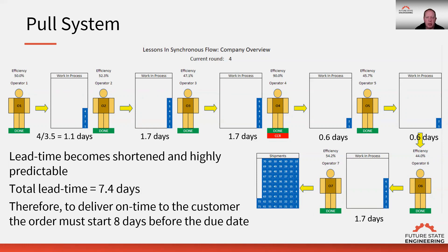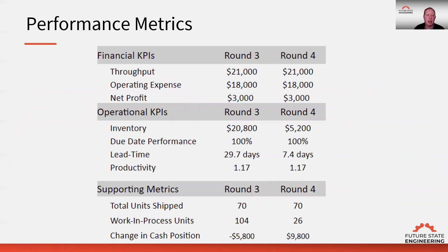Let's look at the impact of these two systems from a financial and operational performance perspective. From a financial perspective, we still have the same profit because we met the demand of the customer and operating expense didn't change. But we have differences in our operational KPIs in terms of inventory and lead time. In the push system, we had $20,800 tied up in inventory; in the pull system, $5,200. Lead time was 29.7 days in the push, 7.4 in the pull. The biggest impact is in cash flow — too much WIP ties up valuable cash. In round three, our cash position went negative and we had to draw from our line of credit. In round four, we freed up cash and had a positive cash flow.